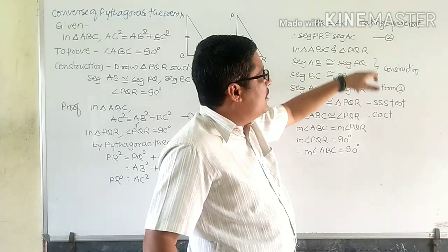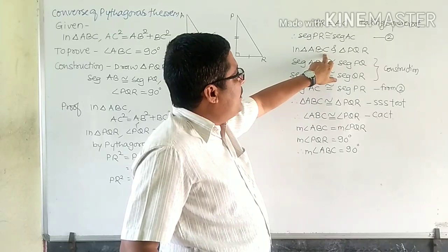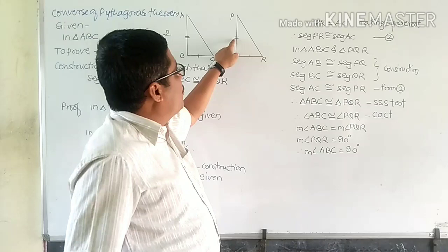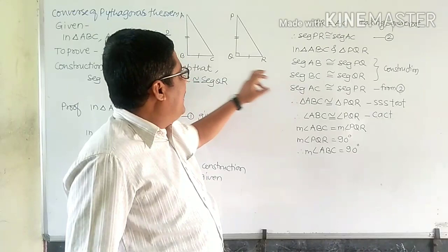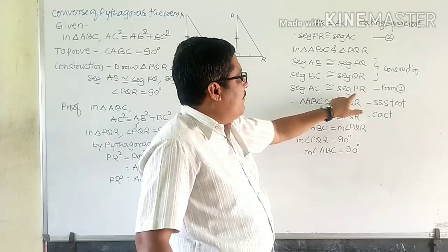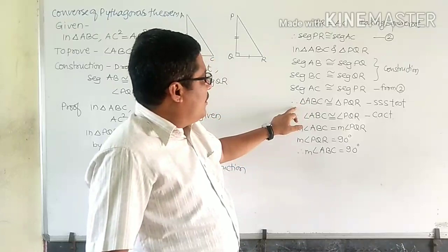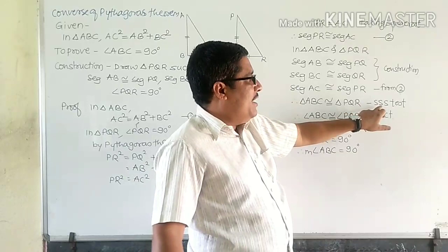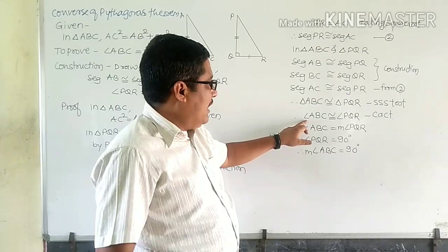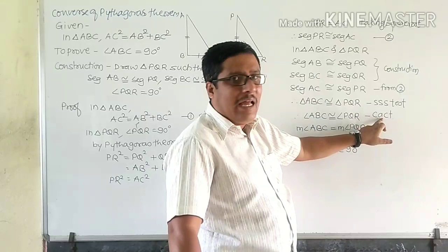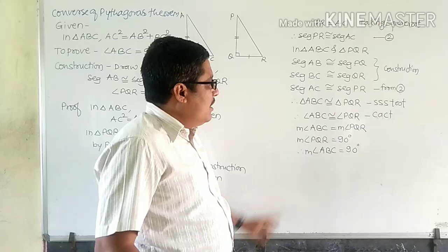We need to use this step in the next part. So in triangle ABC and triangle PQR: segment AB is congruent to segment PQ, segment BC is congruent to segment QR — these are the construction steps — and segment AC is congruent to segment PR, which we proved from equation 2. Therefore, triangle ABC is congruent to triangle PQR by the SSS test of congruence. From this, we can take the corresponding elements: angle ABC is congruent to angle PQR, as corresponding angles of congruent triangles.